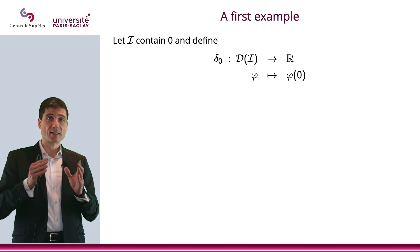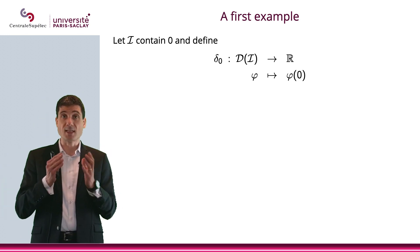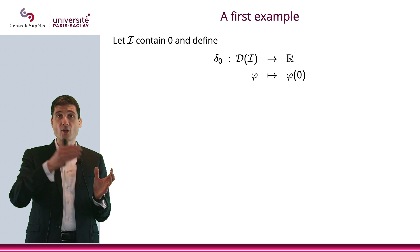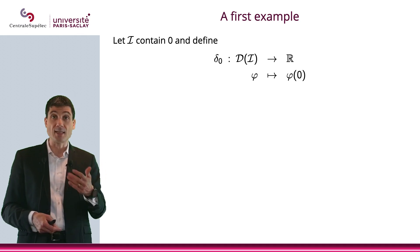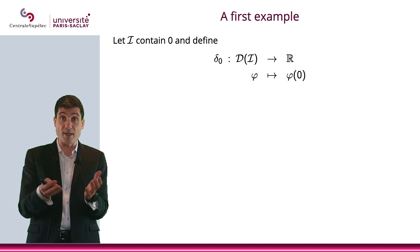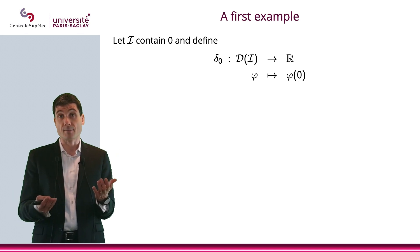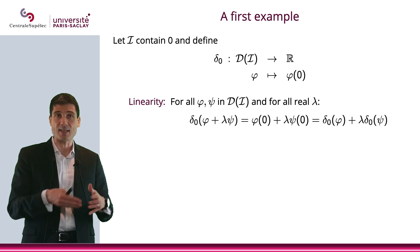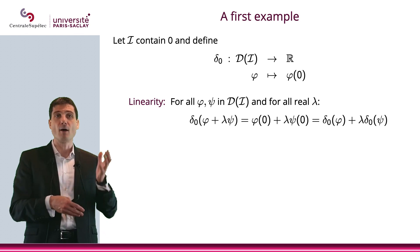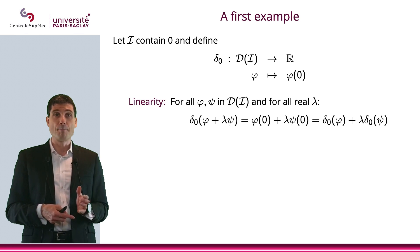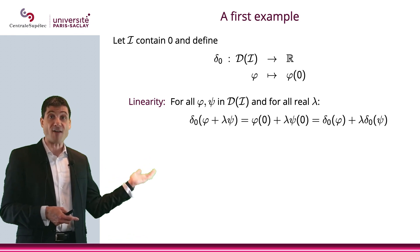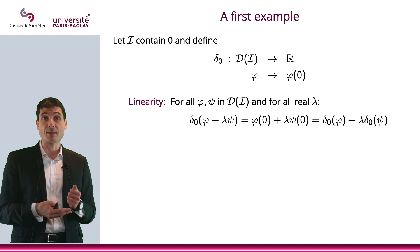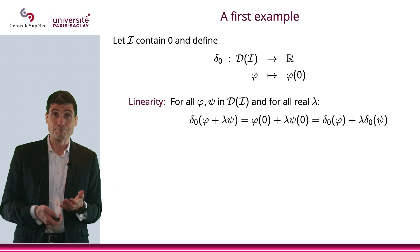Let's give a first example. Let's say the interval I contains zero, and let's consider T to be δ₀, which takes a test function φ and returns φ evaluated at zero. Is this a distribution? It will be if it is linear and continuous. Is it linear? Let's apply δ₀ to any φ, ψ, and λ. We have δ₀(φ + λψ) = φ(0) + λψ(0) = δ₀(φ) + λδ₀(ψ). So it is linear.